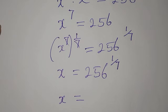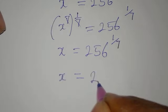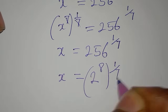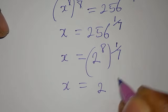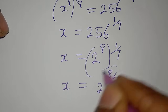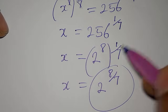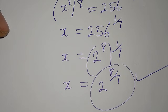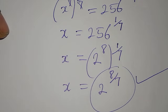To simplify, 256 can be written as 2 raised to the power of 8. So x equals 2 raised to the power of 8, then raised to 1 over 7. Multiplying the exponents gives x equals 2 to the power of 8 over 7. That is the value of x from the first method.